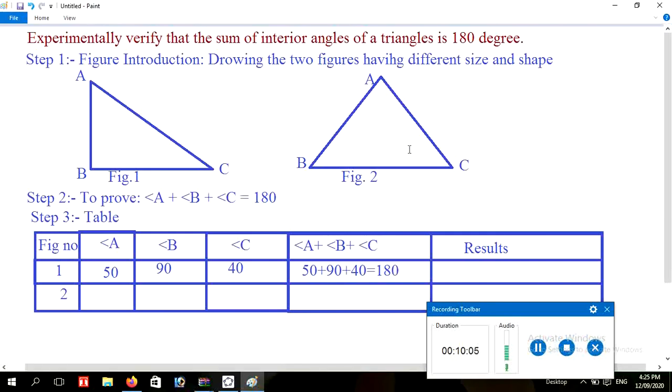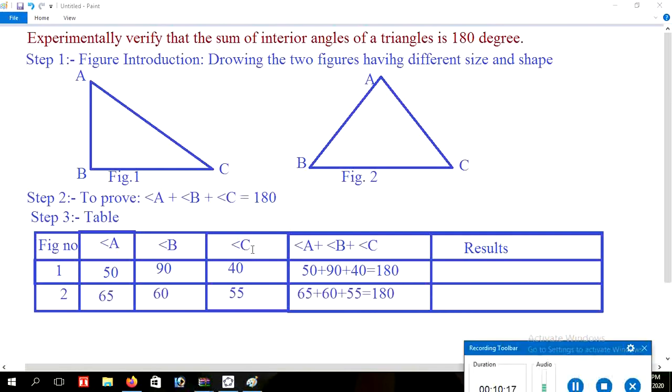Similarly measure the figure 2 by using protractor and write here measure of every angle. In the experiment of these two figures, we find the sum of every angle is 180 degrees. It's true, the sum of interior angles of triangle is 180 degrees.